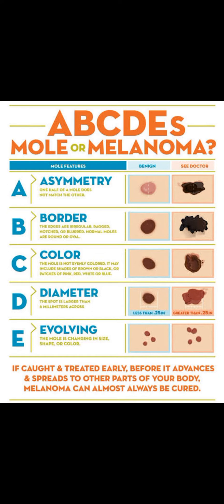The mnemonic for melanoma features is ABCDE: A stands for asymmetry, B is for border irregularity, C is for color variation, D is for diameter greater than 6 mm, and E is for evolution over time.